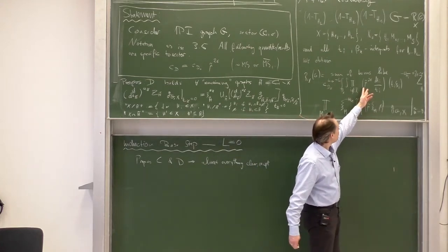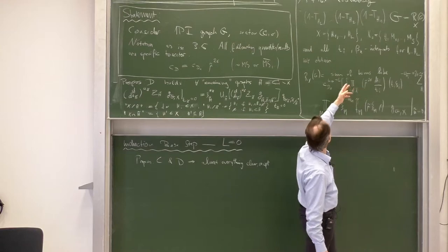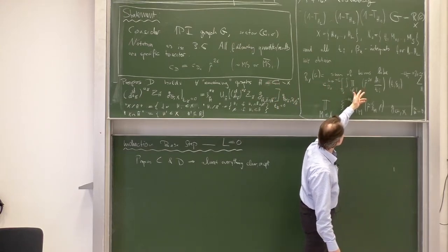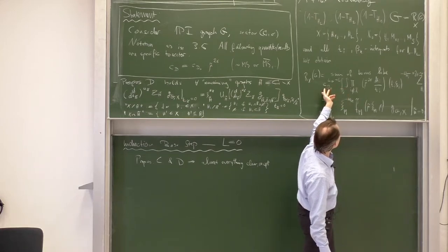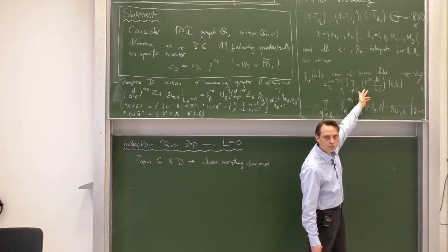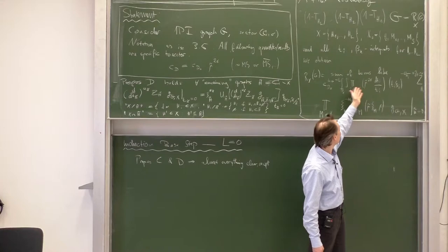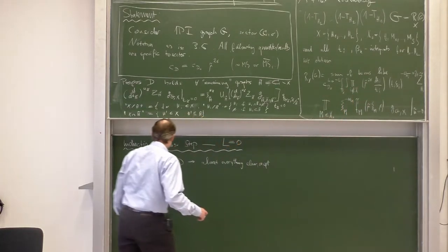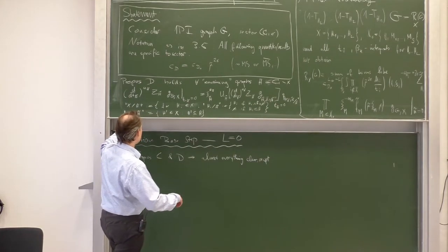I made explicit the appearance of mu or mu-tilde by doing this definition, but that is clear. We factored out of the loop factor C_b for each t — there are as many t's as there are loops — a factor mu-tilde to the 2-epsilon, and then this appearance is already fully clear. Let us now discuss the t variables.